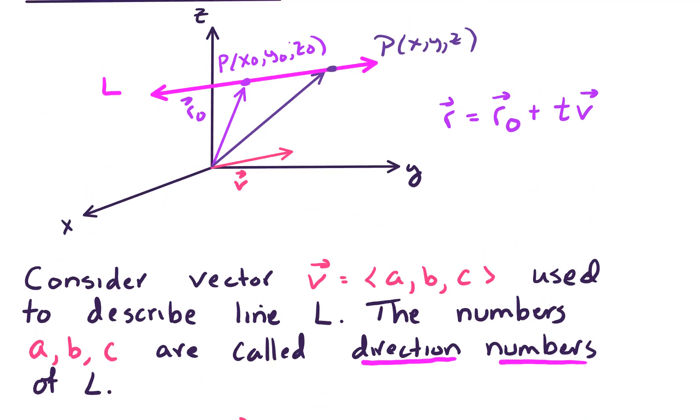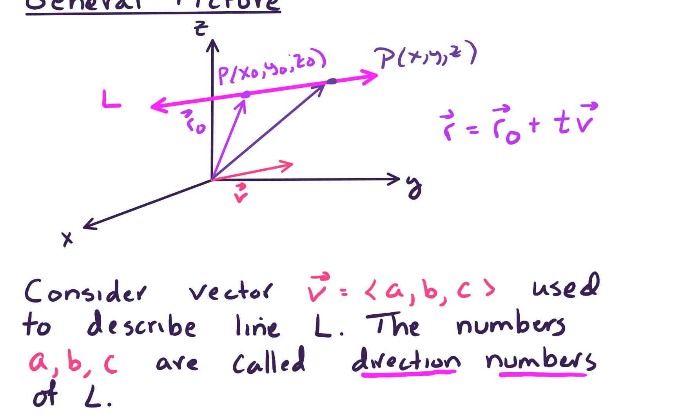Now, when we look at this vector V with components A, B, and C, if that vector V is used to describe line L, the numbers A, B, and C are called direction numbers of L.